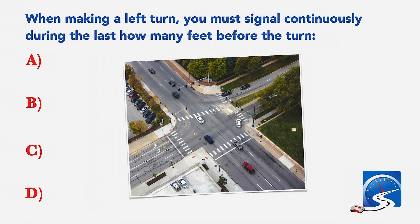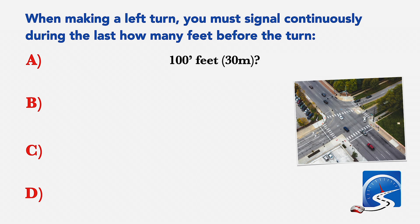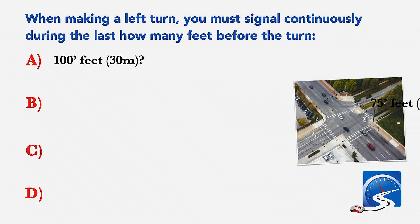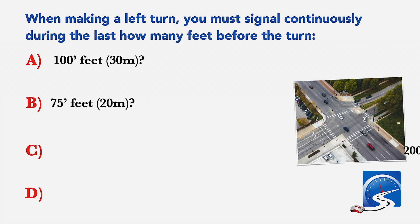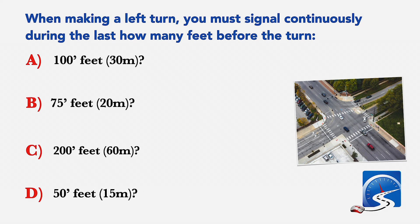When making a left turn, you must signal continuously during the last how many feet before the turn? A: One hundred feet. B: Seventy-five feet. C: Two hundred feet. D: Fifty feet. Correct answer A: One hundred feet.